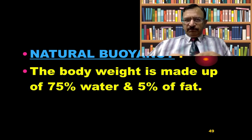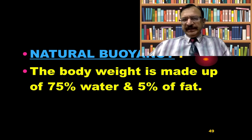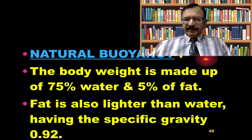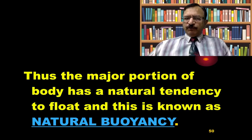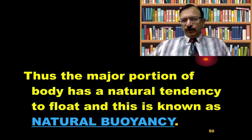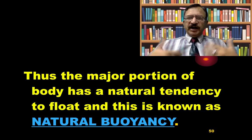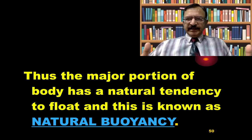There is a natural buoyancy in our body. The body weight is made up of roughly 75% water and 5% fat. Fat is also lighter than water, having a specific gravity less than 1. Thus, the major portion of the body has a natural tendency to float. This is known as natural buoyancy — in Urdu, we say 'paani ki uchhal.'